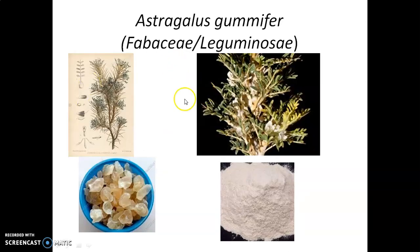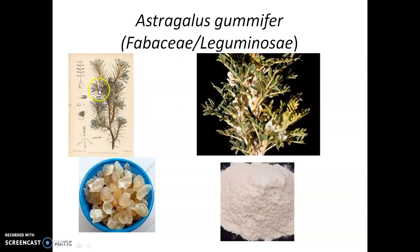Astragalus gummifer is the source of Tragacanth. Tragacanth is basically a gum obtained from the plant Astragalus gummifer — it is an unorganized drug. Here you can see the image of Astragalus gummifer; on the left side is the herbarium of this plant, in the middle is the image of the gum in raw condition, and on the right is the powder of this gum.